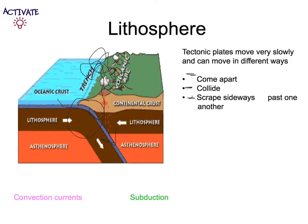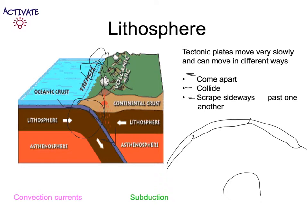The reason that the tectonic plates move is due to convection currents in the mantle. We've got our crust divided into plates, and then we've got the core. The core is generating a lot of heat. When we heat particles, they gain more kinetic energy — they move around more and they take up more space. This makes them less dense than their surroundings. So where the core is really hot, it heats up the mantle, and that part of the mantle becomes less dense and floats to the top.